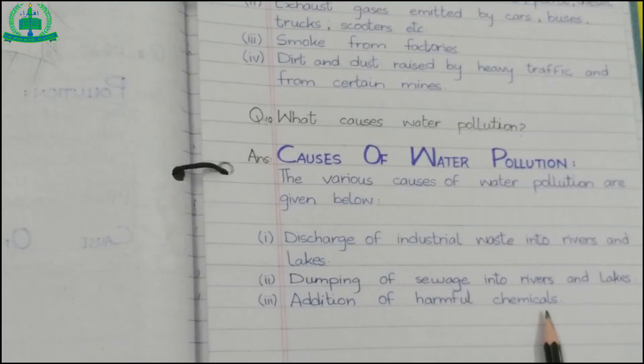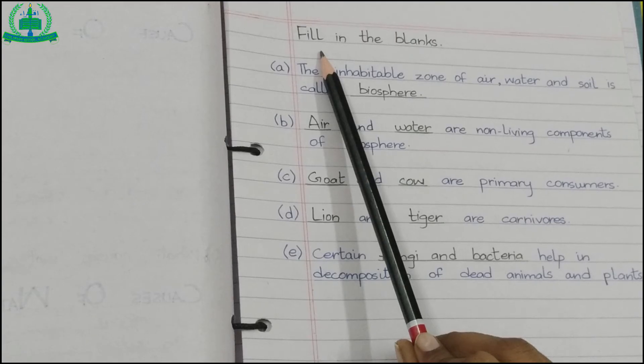Question number ten: What causes water pollution? Answer: Mention heading causes of water pollution. The various causes of water pollution are given below. One: discharge of industrial waste into rivers and lakes. Two: dumping of sewage into rivers and lakes. Three: addition of harmful chemicals.